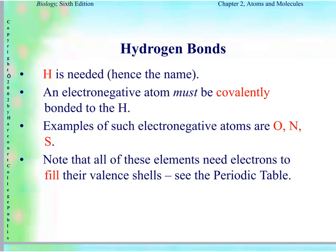Another bond we talk about is hydrogen bonds. Hydrogen is covalently bonded to an electronegative atom. Electronegative atoms are oxygen, nitrogen, and sulfur — these are the main ones we look at. Note that all of these elements need electrons to fill their valence shells.